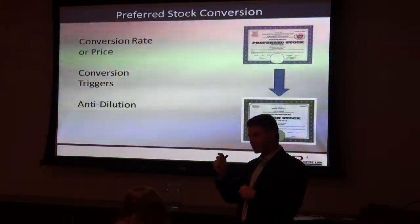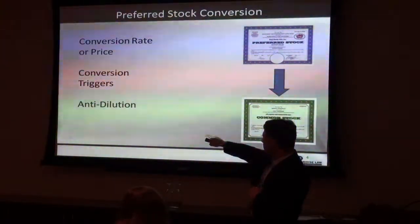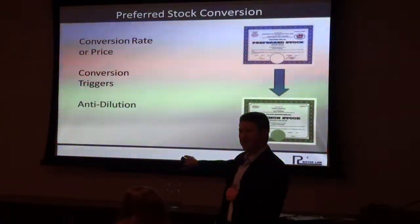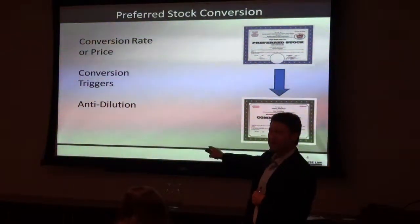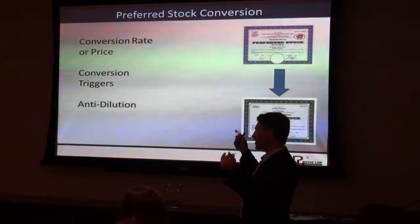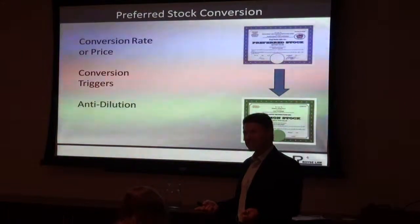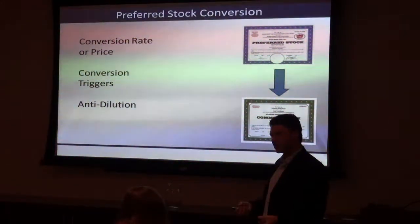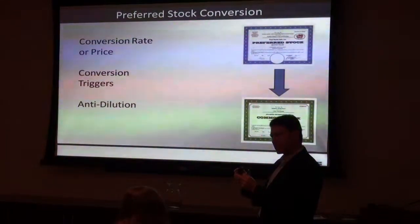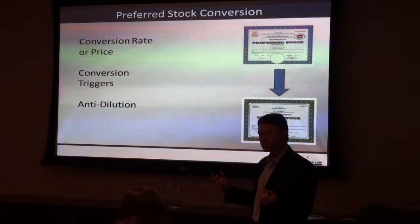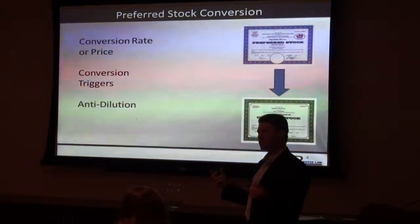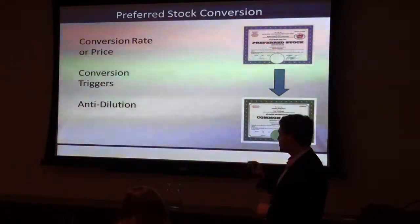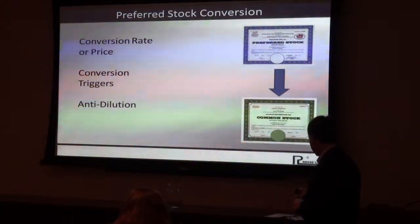Why do we phrase it that way? Because the conversion price is going to be adjusted by different anti-dilution triggers. If I sell you preferred stock for a dollar a share and a day later I do a big common stock split, now I've got twice as many common shares. Well, that's not very fair — the conversion price will adjust by that. So the number of common shares when the preferred converts is going to increase proportionately. That's why you'll see it phrased that way — to take into account anti-dilution.